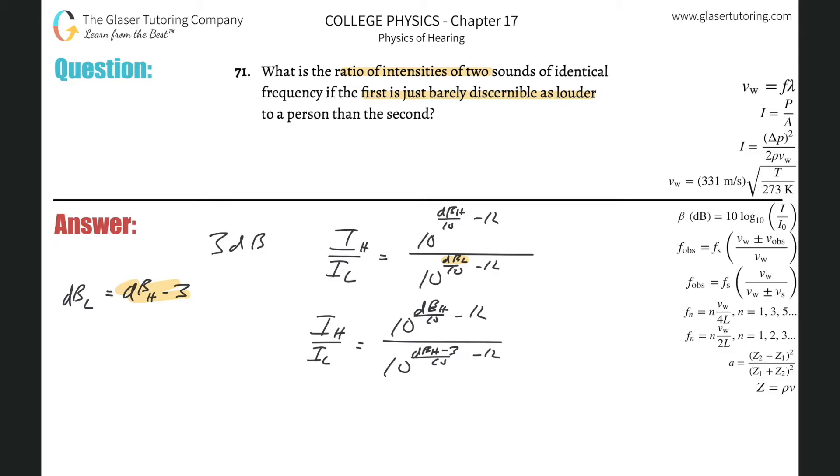Rules of exponents here, when I divide same bases, and when I do a division, I can take this and subtract this from it. So it's basically now going to be i sub h over i sub l is going to be 10 raised to the dbh all over 10 minus 12 minus then that whole denominator, dbh over 10 minus, this is minus 3 on the top, and that's going to be minus 12.